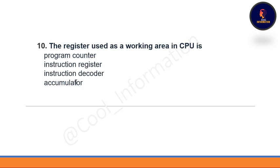Question 10: The register used as a working area in the CPU is — option A: program counter, option B: instruction register, option C: instruction decoder, option D: accumulator. The correct option is D, which is accumulator.